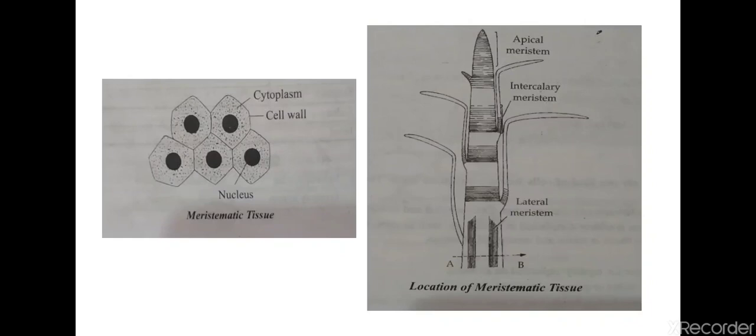Meristematic tissues are also called meristems. These are basically regions within the plant body that are involved in the formation of new meristematic cells. Apical meristem — you can see the location in the picture. They are basically found at the growing tip of roots and stems, and it helps to bring about the growth in length of roots and shoots.